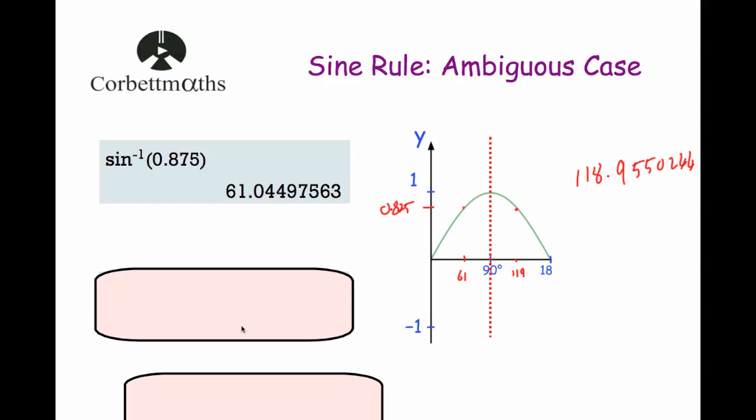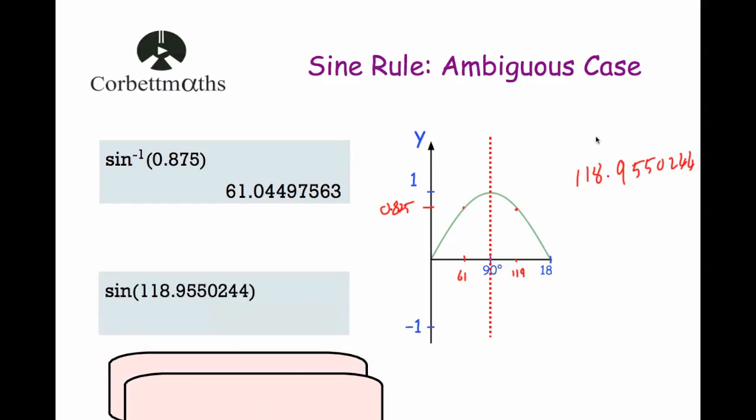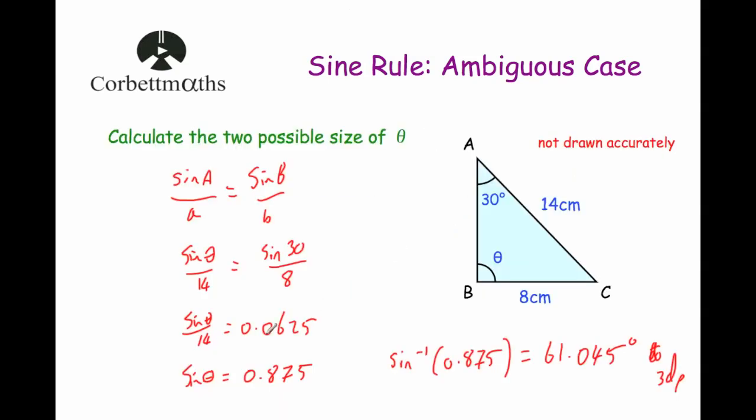And just testing it, if you were to do the sine of that angle, you get an answer of 0.875. So that means that there are two possible angles between 0 and 180 degrees that had a sine of 0.875. One of them was 61.045 and the other one was 118.955.